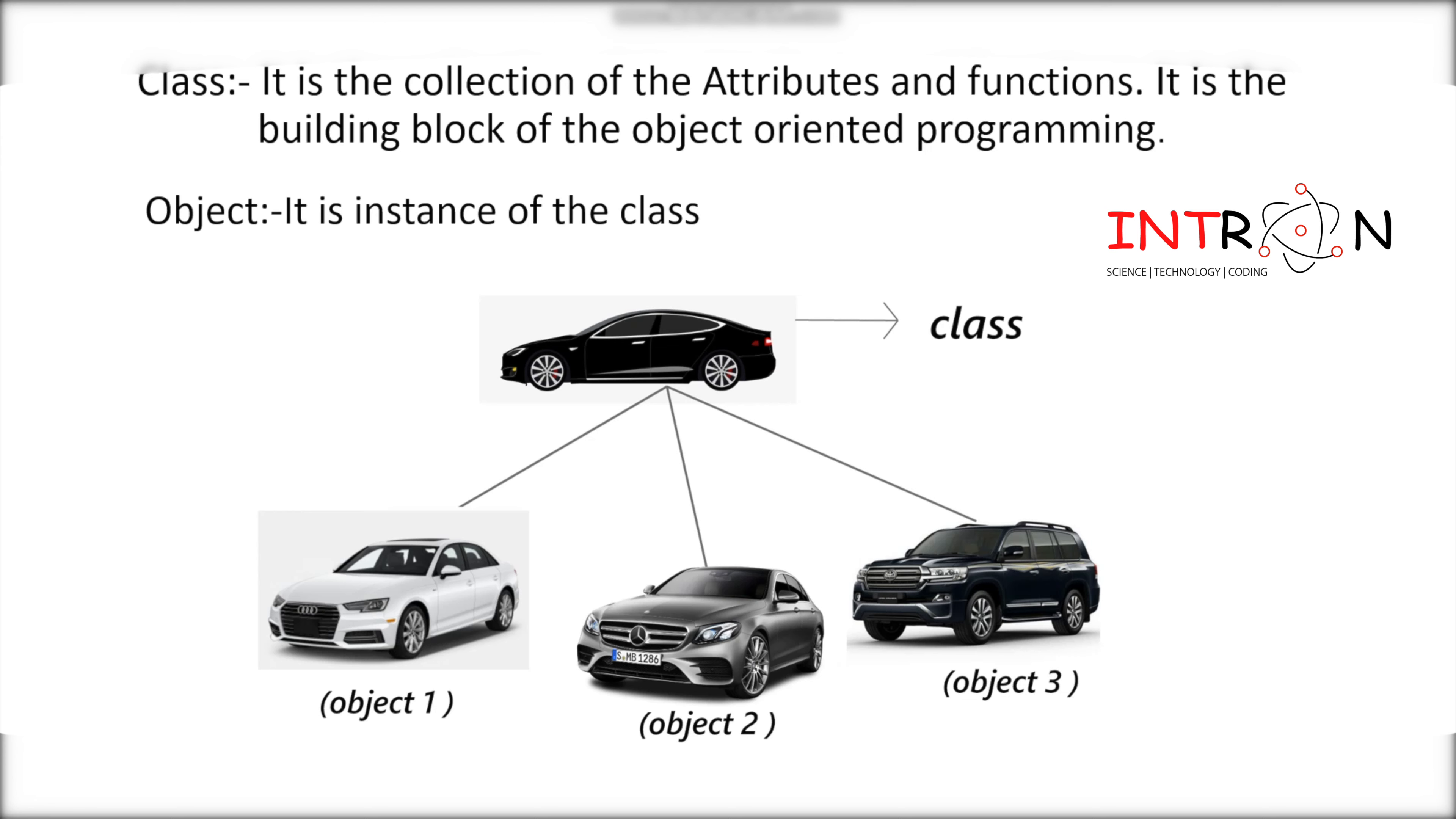Object: it is an instance of a class. When a class is defined, no memory will be allocated to that particular class. But when it is instantiated, that is when an object is created, memory is being allocated.